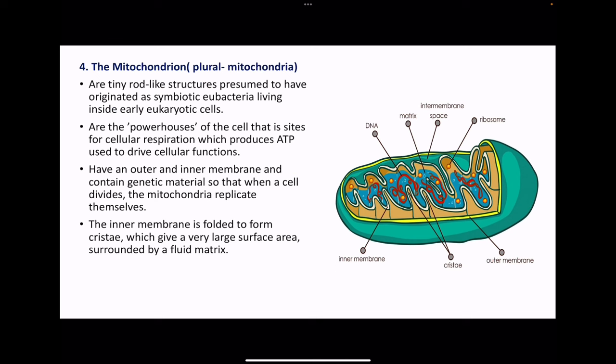The mitochondria is an organelle and is membrane-bound. It has an inner membrane and an outer membrane. The inner membrane is folded to form cristae. The cristae are highly folded to increase the surface area for reactions that take place there, and these are reactions of aerobic respiration. Inside there is specific circular DNA. We can see the matrix, as well as the intermembrane space, which is the space between the two membranes, and there is some ribosome for protein synthesis inside the mitochondrion.